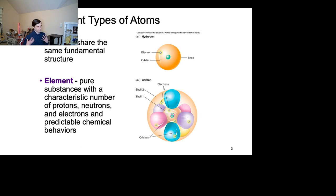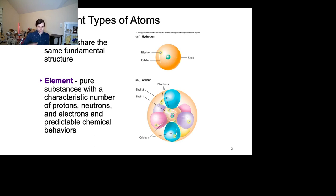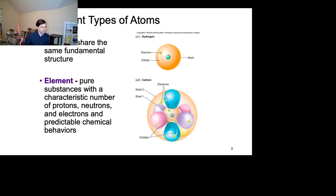Every single atom on the planet, regardless of how many protons, electrons, and neutrons you have, pretty much shares the same fundamental structure. They have a nucleus in the middle that has all the protons and all the neutrons shoved together in one big ball. Around that nucleus, the electrons float around it. Those electrons are really fast and really tiny — it's hard to tell where they are at any point in time. Regardless of how big your nucleus is, all atoms are put together the same way: nucleus in the middle, electrons flying around the outside.